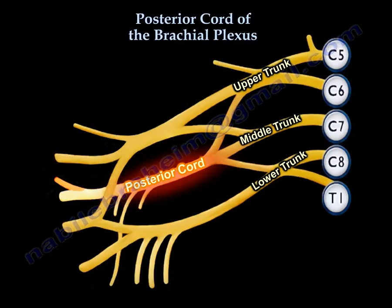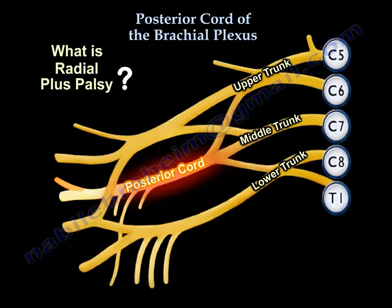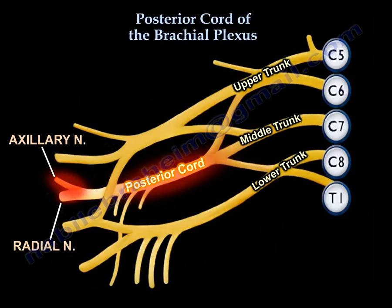Palsy of the posterior cord is called radial plus palsy. Radial plus palsy means you will have radial nerve palsy plus axillary nerve palsy, because these are the two terminal branches of the posterior cord — the radial nerve and the axillary nerve. So a palsy of the posterior cord will involve a combination of these two nerves.